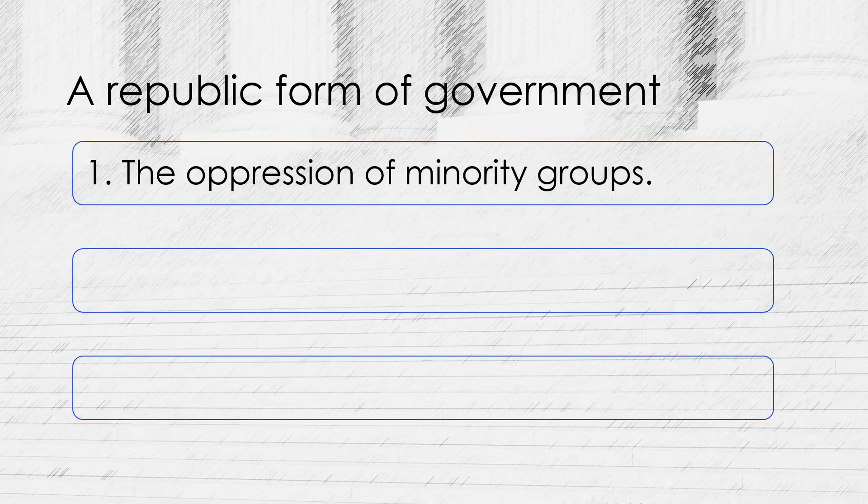It is important to note that the Founding Fathers of the United States chose a Republican form of government, rather than a pure democracy, for a number of reasons. One reason was that the Founding Fathers were wary of direct democracy because they believed that it could lead to the oppression of minority groups. For example, they were concerned that if decisions were made purely by popular vote, the majority might be able to enact laws or policies that harmed smaller groups.